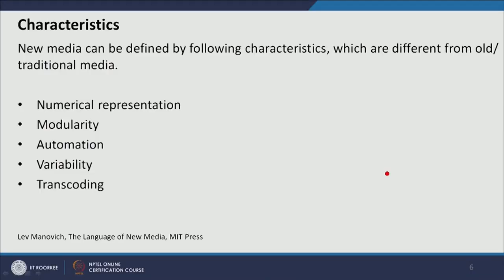The first characteristic is numerical representation. Second is modularity — a modular approach is followed to represent new media. Third is automation, and fourth is variability — both arising because of numerical representation and modularity of data representation. Fifth, it follows the principle of transcoding.